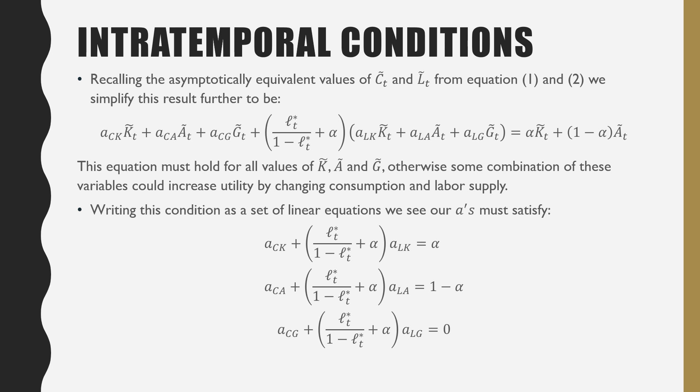That would not be a unique solution. Writing these conditions as a set of linear equations, our A's must satisfy the following. So that's how we solve for this. If you want to get specific values of our A's, you just put this in a matrix and apply Kramer's rule to get each one of these values. But I'm not going to go through that right here.